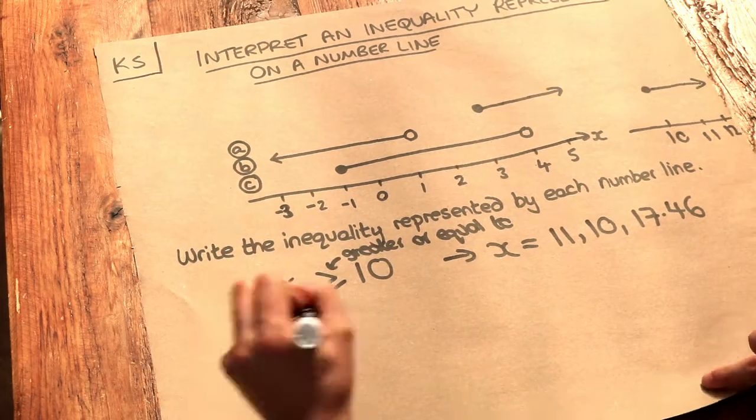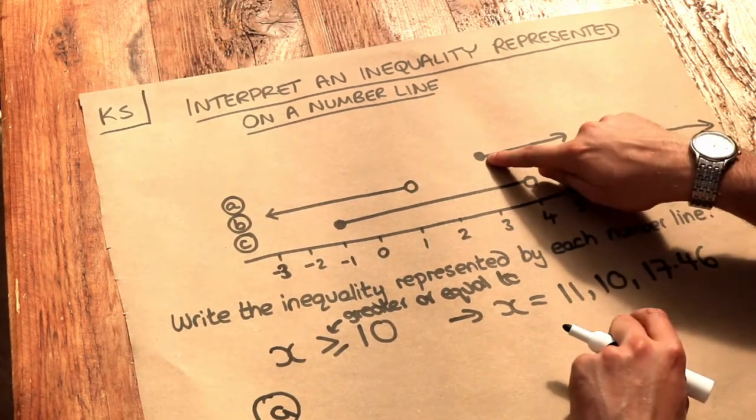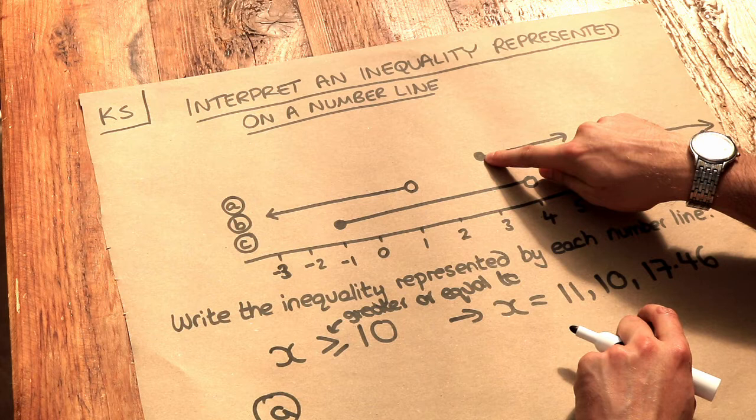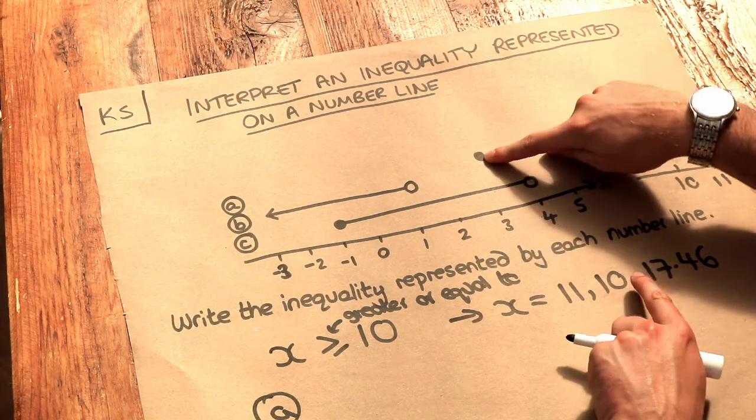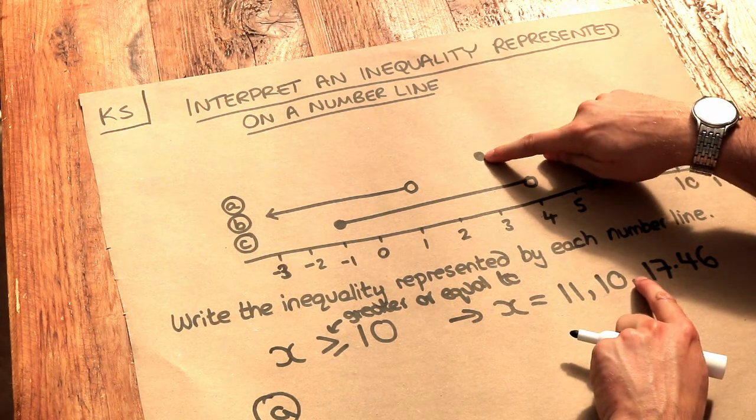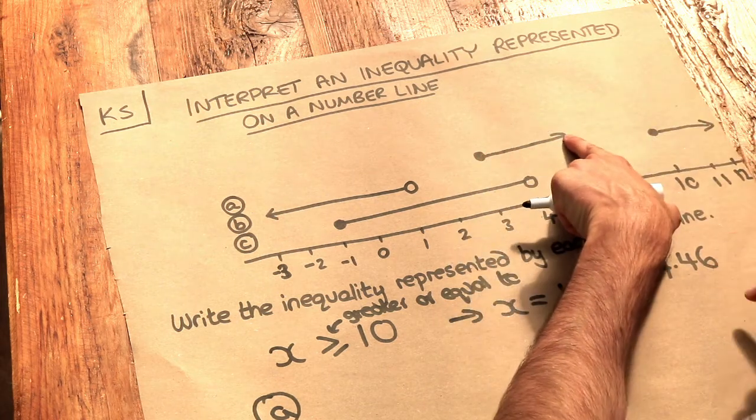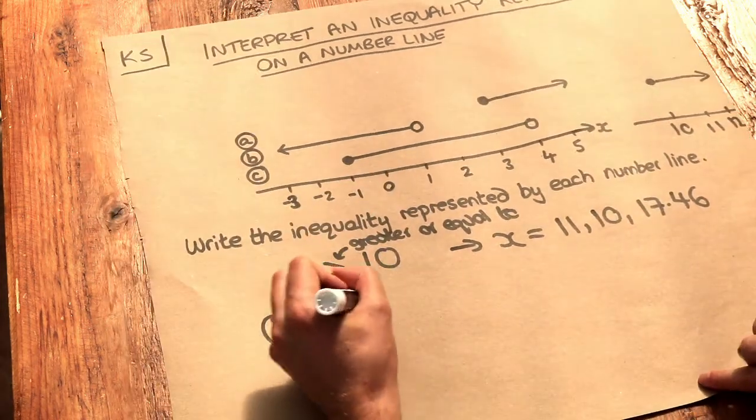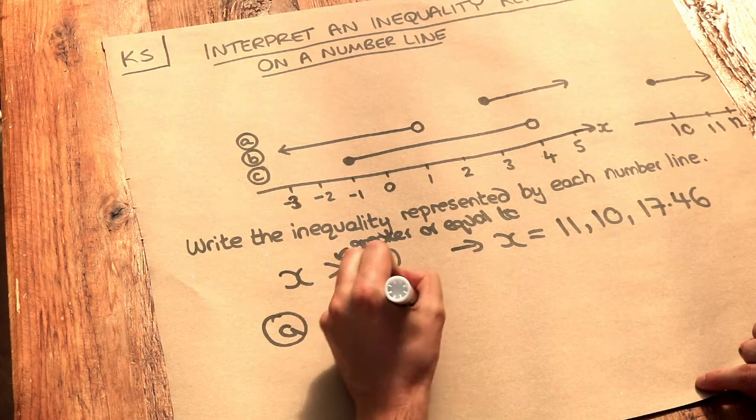Well, there's a dot on the 3 for this a line. So it's saying that x could be 3. But it could also be any number greater than 3. And therefore the inequality it represents is x is greater than or equal to 3.